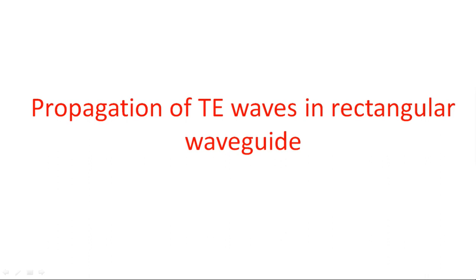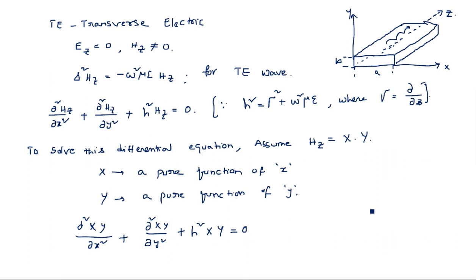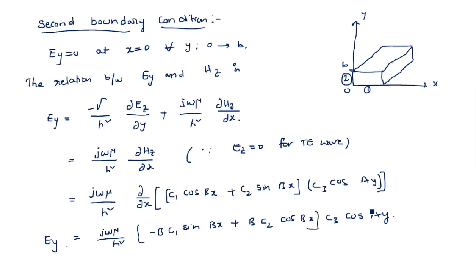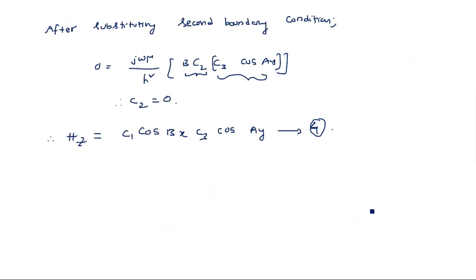Hi everyone. In this video I am continuing the derivation of TE waves — propagation of TE waves in rectangular waveguide. In the last video I calculated up to the second boundary condition, and we obtained the Hz equation as c1·cos(bx)·c3·cos(ay). That means half of the terms are gone: c2 and c4 are set to zero. So Hz is equal to this expression.